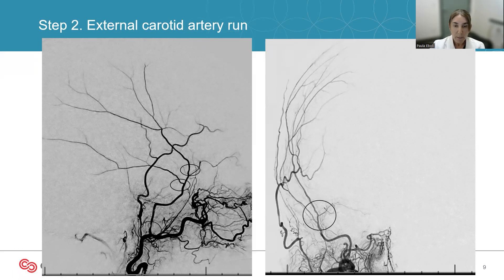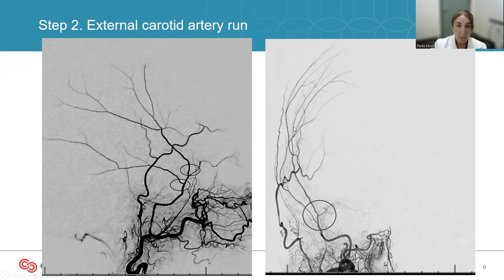When planning the embolization, if there is a sphenoidal branch with potential anastomosis to the eye, I always plan to embolize distal to each branch and avoid reflux past the origin of that branch. When embolizing two branches separately, I always try to embolize the most dominant branch first — which most of the time is the frontal branch — so that if access is lost, the most important branch has already been treated.